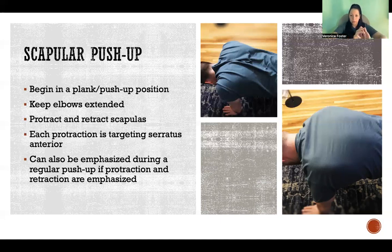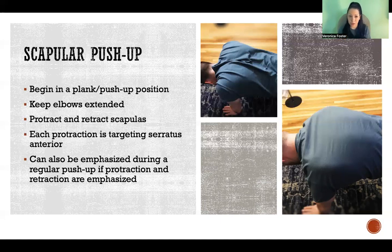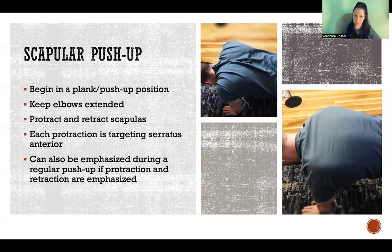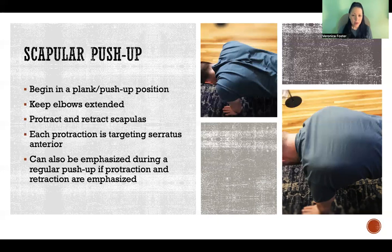Just going up and down with the scapulas while keeping the elbows and glenohumeral joints stationary is a great way to target serratus anterior. That motion can also be incorporated into a regular pushup, with extra emphasis on protraction at the top and retraction at the bottom. As long as you emphasize that scapular motion, you'll be targeting serratus anterior. Some people do pushups with scapulas fixed — that would only isometrically work serratus anterior — but you won't get as complete a workout without going through full range of motion and allowing it to activate to its fullest extent.